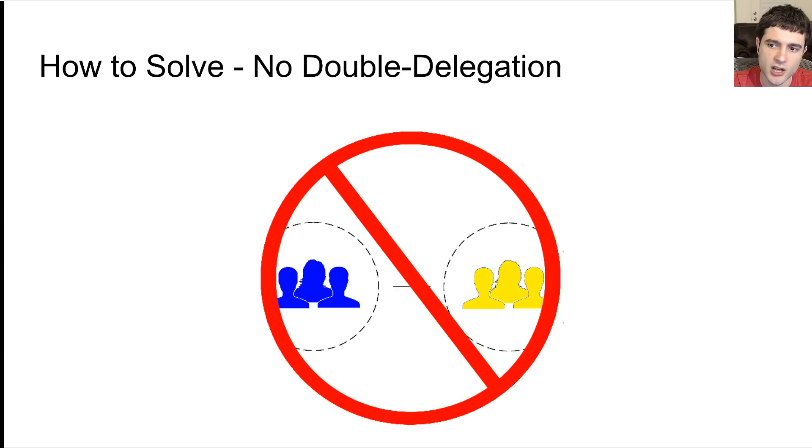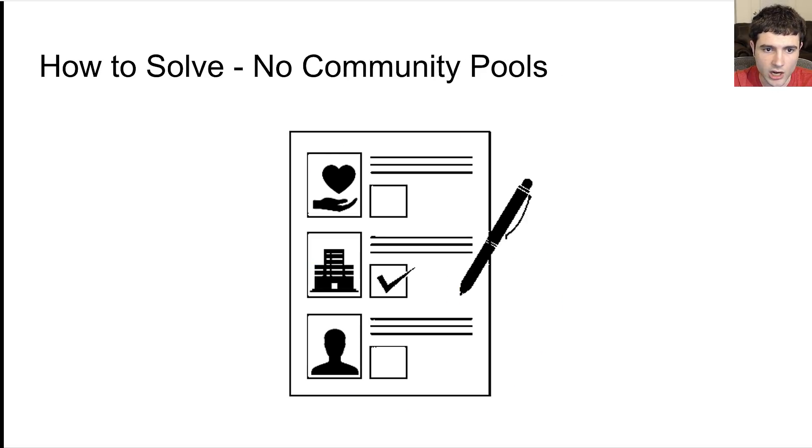Another way you can solve this is just to get rid of this double delegation feature. There's some advantages to this double delegation. It's debatable whether this is actually a feature you want to have. Basically, one option we could do is just to make this no longer possible. The last one is just no community pools. We will have to accept as a group that there will be no such thing as a community pool. It will not be possible to set up some decentralized pool where people can vote on their favorite cause.